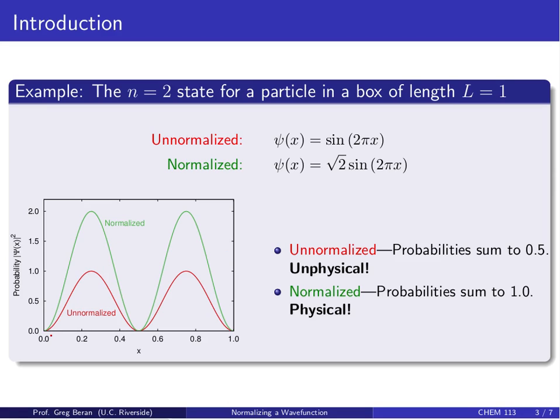If you evaluate the integral of ψ*ψ over the entire length of the box, if you do it for the red unnormalized curve, you'll find that it sums to 1/2, whereas if we do it for the green curve, it sums to 1.